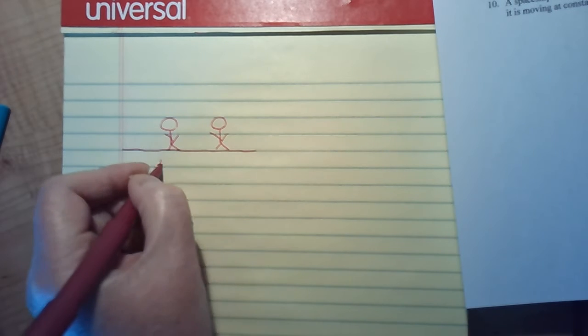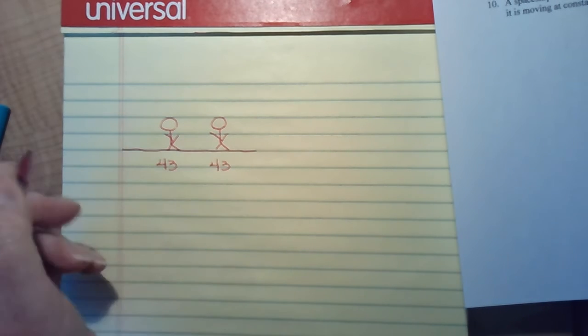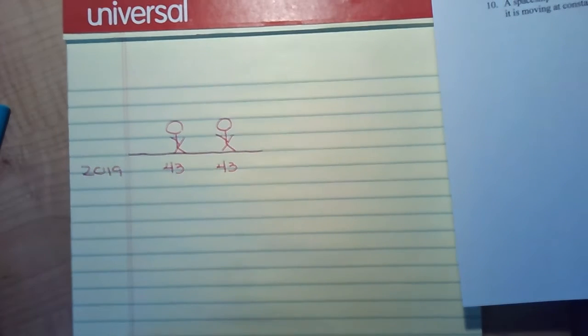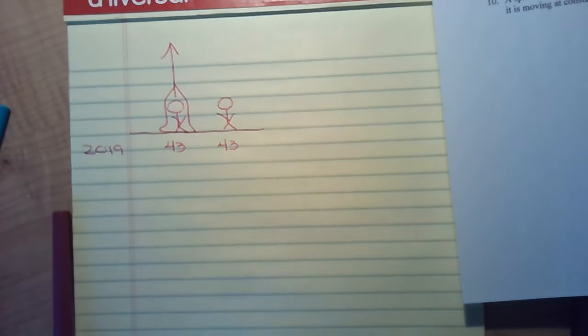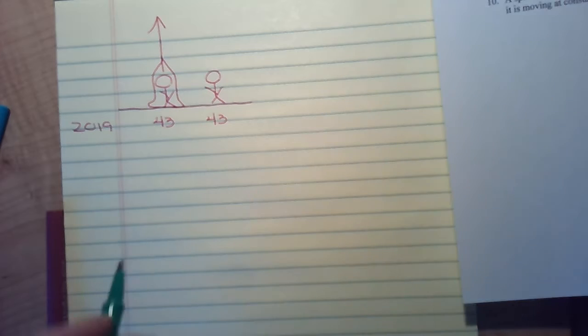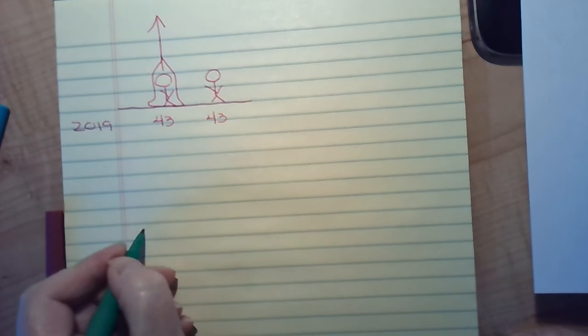So we have them meeting at the NASA Space Center. I'm going to draw two people. This first person is going to be Mr. Nectarline. The second person is going to be Mrs. Garmo. They are both 43 years old. This was, by the way, in 2019.